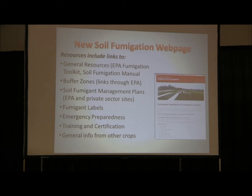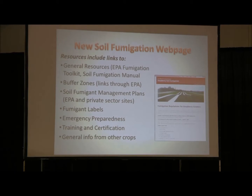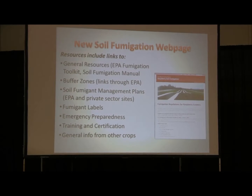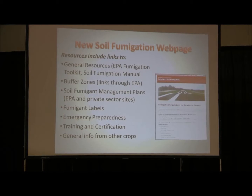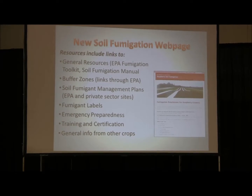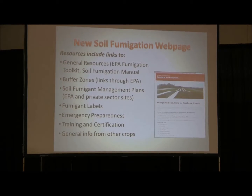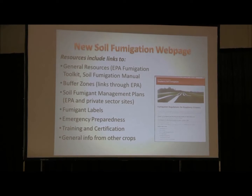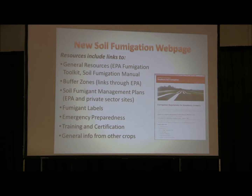We do have a new soil fumigation web page directly for raspberry growers. There are some general resources, links to EPA sites, and a soil fumigation manual — a PDF document — which is really great if you're going to be doing any of your own soil fumigation or just want to understand the regulations better. There's information on buffer zones, links through the EPA, soil fumigation management plans, fumigant management plan templates from private sector websites, links to fumigant labels, emergency preparedness, training and certification, and general information from other crops dealing with similar fumigation issues.